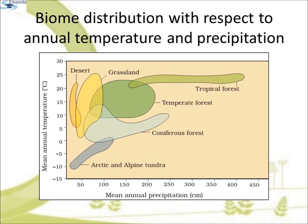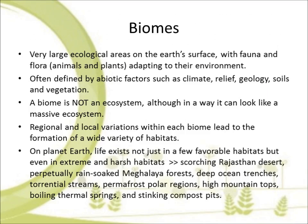In this graph, you can see the biome distribution with respect to annual temperature and precipitation, where the various biomes are arranged accordingly. Biomes are very large ecological areas on the earth's surface with fauna and flora — that is the animals and plants — adapting to their environment. Biomes are often defined by abiotic factors such as climate, relief, geology, soils and vegetation. A biome is not an ecosystem, although in a way it can look like a massive ecosystem.